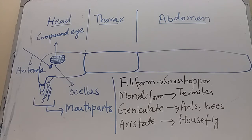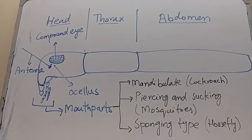The mouthparts hang downward from the head, and there is variation in mouthparts among insects depending on the type of food they eat. Mouthparts may be of mandibulate type as in cockroaches and grasshoppers, piercing and sucking type as in mosquitoes, or sponging type as in the house fly.